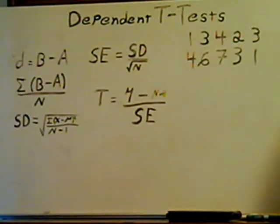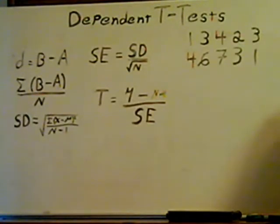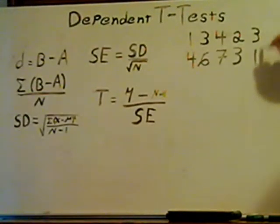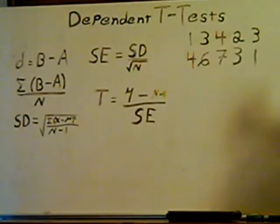Dependent t-tests use the same sources or related sets to obtain the sample for both populations. All that means is that your second set of data is going to depend on your first one.